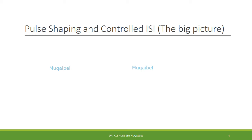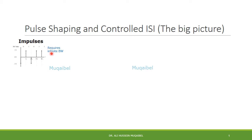The objective of this presentation is to show the general picture for pulse shaping and controlled ISI. The first thing that comes to mind is that when we communicate, we send data over the channel using impulses. The problem with this thinking is that it requires infinite bandwidth, so impulses are not a good option.